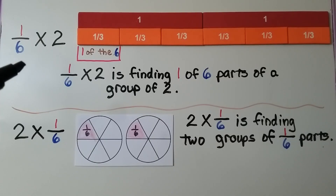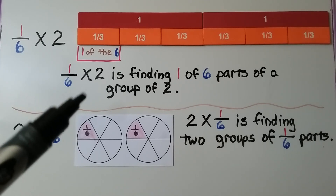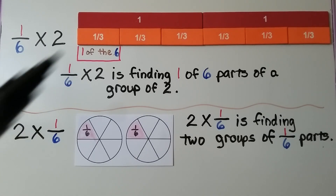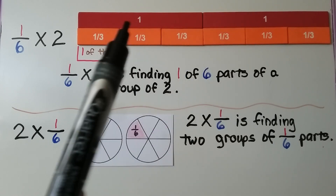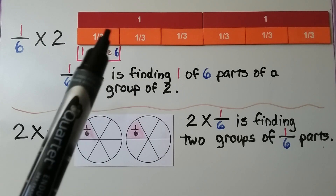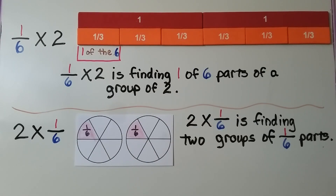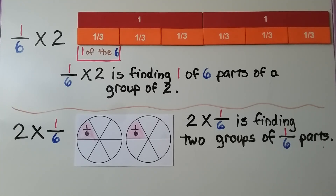Now here we're modeling 1 sixth times 2, and here we're modeling 2 times 1 sixth. We have the same factors, just in a different order. When we model 1 sixth times 2, it's finding 1 of 6 parts of a group of 2. We're multiplying by 2 whole — we have 2 whole models. We find 6 fraction parts that will evenly fit under the 2 whole, and 1 third pieces will fit; we have 6 one-third pieces. We need 1 of them — the numerator tells us 1 — so 1 of these 6 pieces is 1 third.